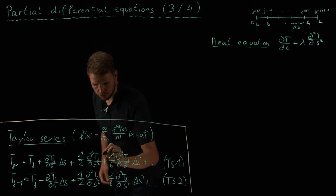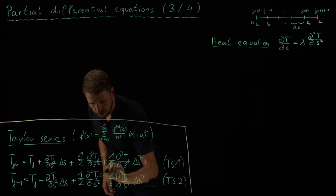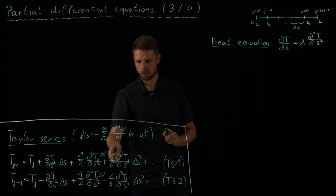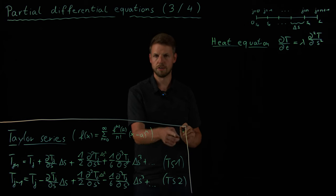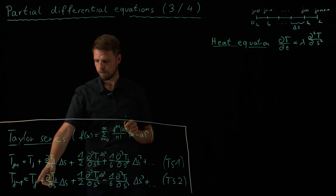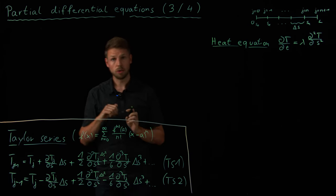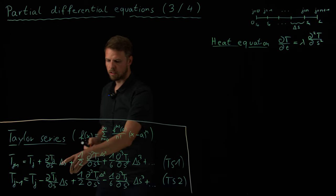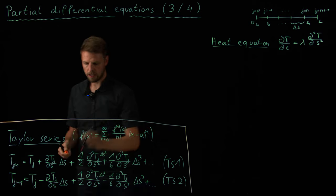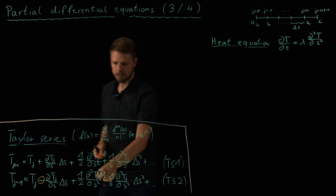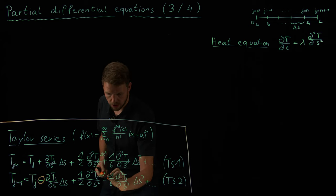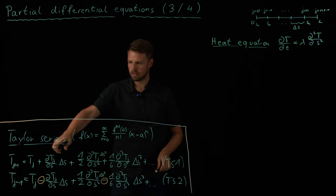Plus one-half times the second derivative times delta S squared, plus one-sixth times the third derivative times delta S cubed, and so on — fourth order, fifth order, sixth order terms. I can do the very same thing using T_J again, the temperature at node J, but not going to the right, but going to the left. The only thing that changes is that I consider minus delta S because I'm going delta S to the left. So in the first order term this becomes minus delta S; in the second order term it's minus delta S squared, so it's a plus again; in the third order term it's minus delta S to the power of three, so here there's a sign difference. So one series has plus terms only, while the other has alternating minus and plus terms.